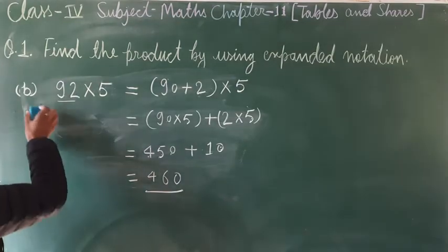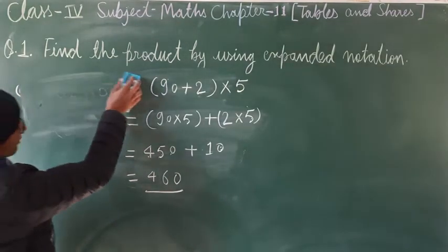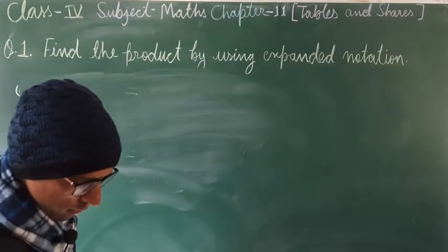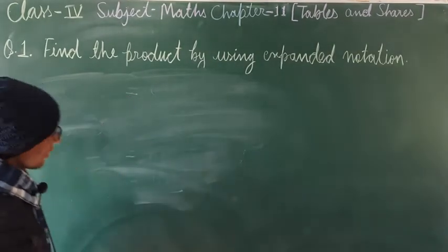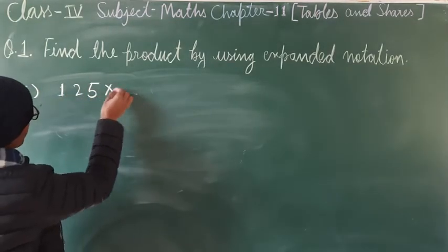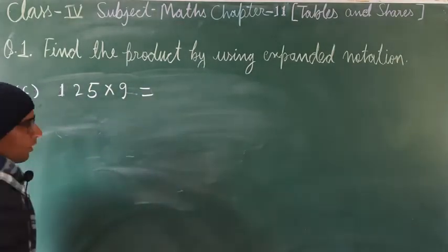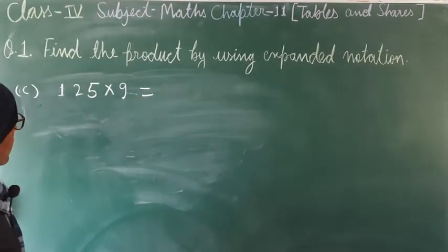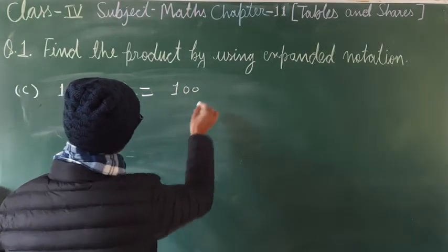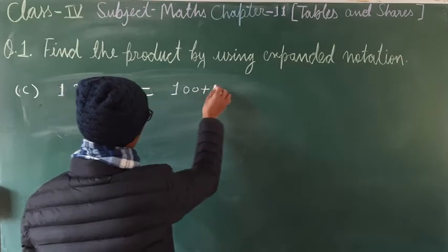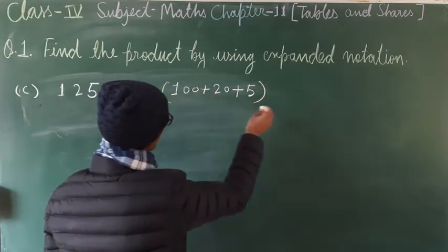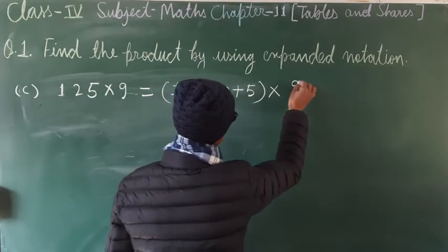Now the third part uses a 3-digit number. How do we apply expanded notation to 3-digit numbers? Part C: 125 × 9. Write 125 in expanded notation: 100 + 20 + 5.